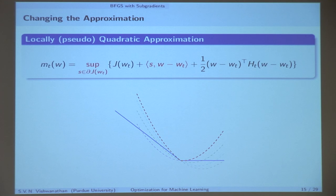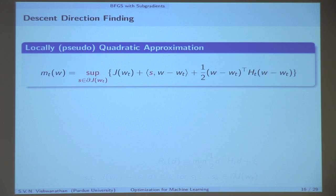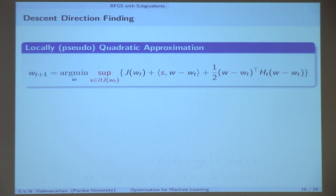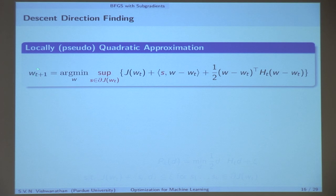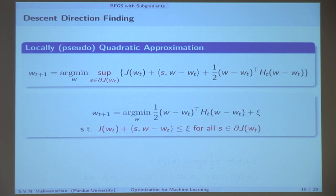Suppose somehow I could compute this upper envelope. The next question is: how do you find a direction of descent? Exactly like quasi-Newton algorithms, take this locally pseudo-quadratic approximation and minimize this model. I find my next iterate by minimizing this model. I can rewrite minimizing this model using the standard optimization trick — the same trick we used in SVMs but played in reverse: I introduce a new variable psi and take this part of the objective function into a constraint.